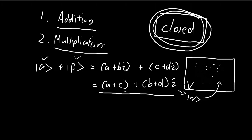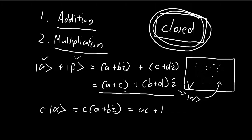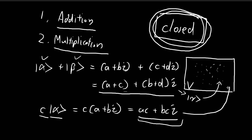The second requirement is that multiplication also needs to be defined — specifically scalar multiplication, the process of multiplying scalars to vectors. If you multiply a scalar c to a complex number alpha = a + bi, you get ac + bci. For complex numbers, the closure property is also achieved for scalar multiplication: multiplying a scalar to a vector in the set gives another complex number, which is also within the set of all possible complex numbers.